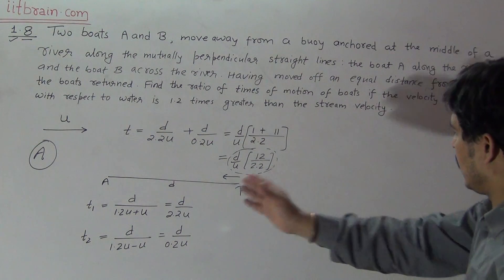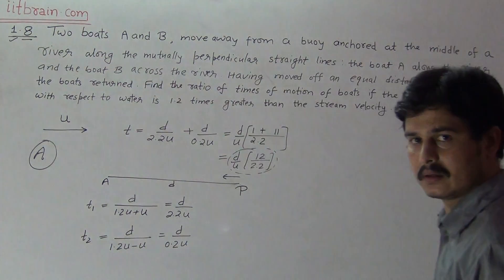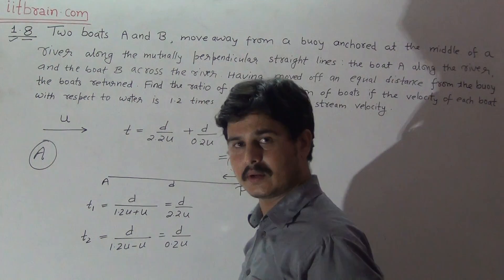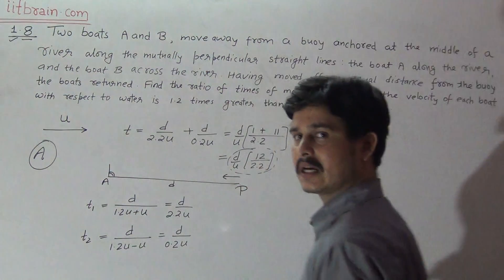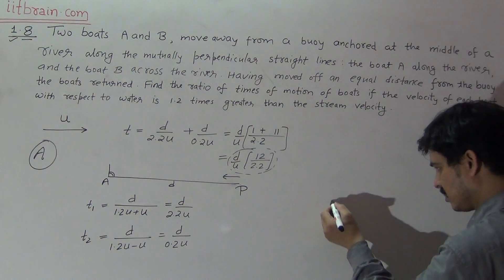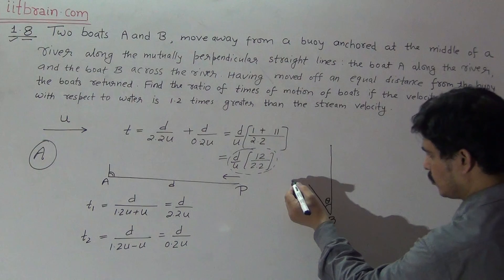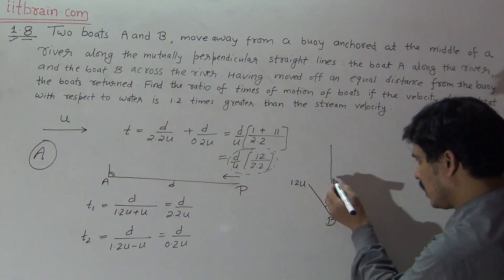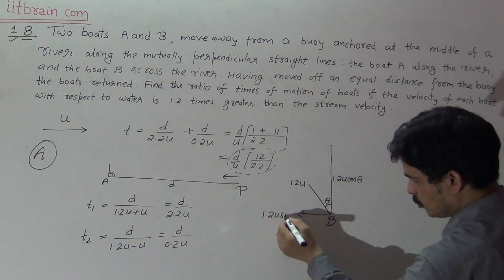The second person B moves across the river, perpendicular to boat A. To maintain a direction perpendicular to the river flow, B must travel at some angle in the backward direction. The velocity of B is 1.2U. The component 1.2U·cos θ is responsible for crossing the river, while 1.2U·sin θ is directed opposite to the river flow.